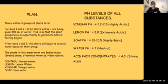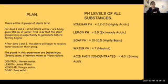The groups are: the control group, which receives normal water; the lemon group, which receives water mixed with lemon juice; the vinegar group, which receives water mixed with vinegar; and the soap group, which receives water mixed with basic soap. The plants in this experiment are Indian moong green beans, otherwise known by their scientific name as Vigna radiata.